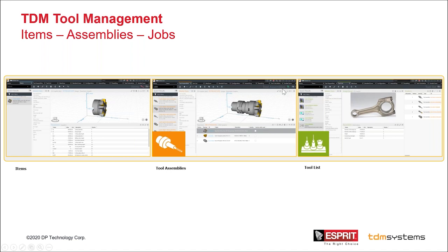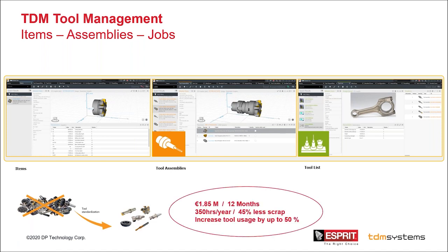The goal of tool management is standardization, transparency, and reduced downtime. Just three numbers: one customer reduced their tool assemblies by 50 percent in one year — from 6,000 assemblies down to 3,000 — saving around 2 million euros. Another customer reduced machine downtime by 350 hours per year by reducing waste along the manufacturing process. A third example: 45 percent less scrap and increased tool usage by up to 50 percent. That's why people do tool management.